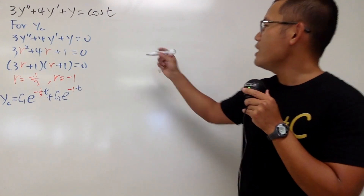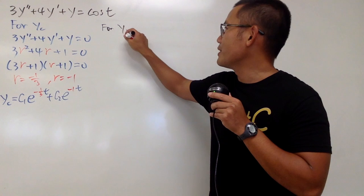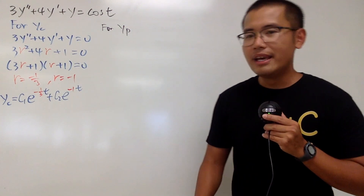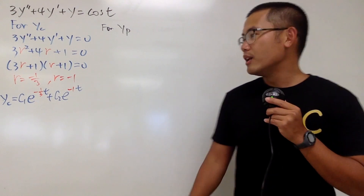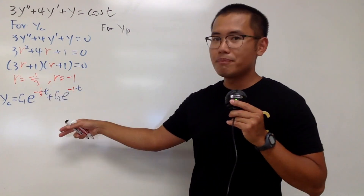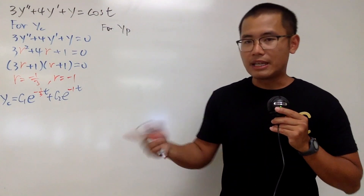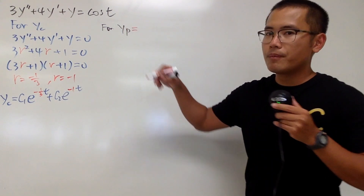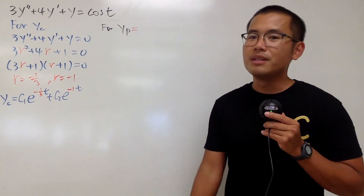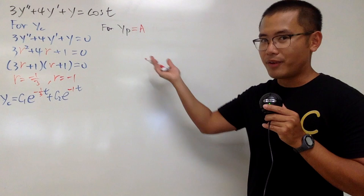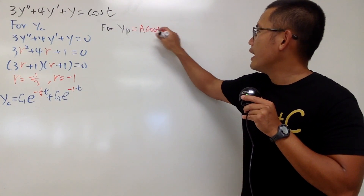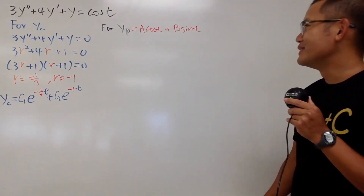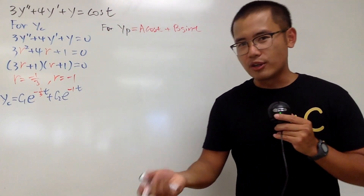Now we are going to find the particular solution. For yp, we look at what's happening on the right-hand side. It's cosine of t, and whenever we have cosine we also have to include the sine. The exponential terms are linearly independent from sine and cosine, so we don't have to do anything fancy with yp. The general form for yp is a cosine t plus b sine t. We differentiate this twice to get the second derivative, plug back in, then solve for a and b.